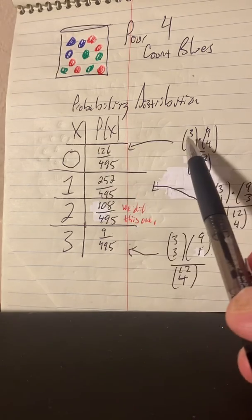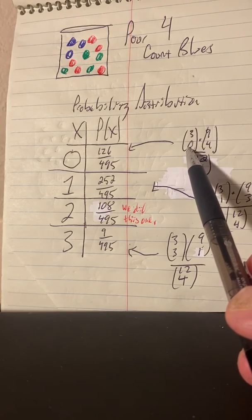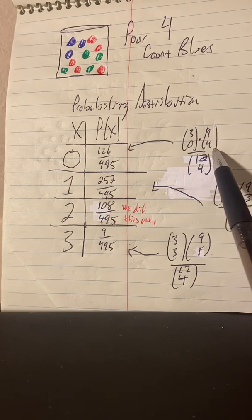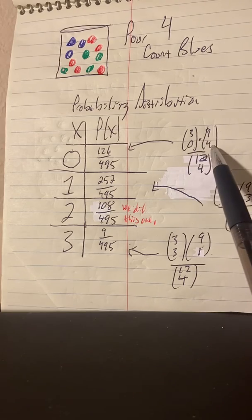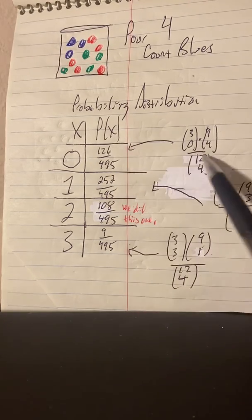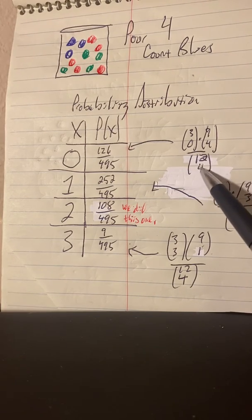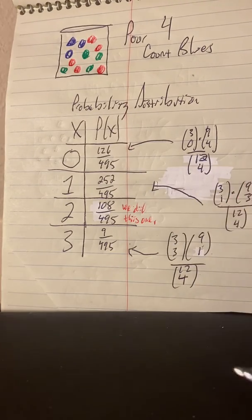Let's do the others similarly. How do we get zero? Well, to get zero blues, from the three blues, we'd have to choose none. And from the nine non-blues, we'd have to choose four. So this is one. Nine choose four is 126. One times 126 is 126. And we already know that the total number of outcomes is 12 choose 4, four from 12, which was 495. So that's the probability of zero blues.